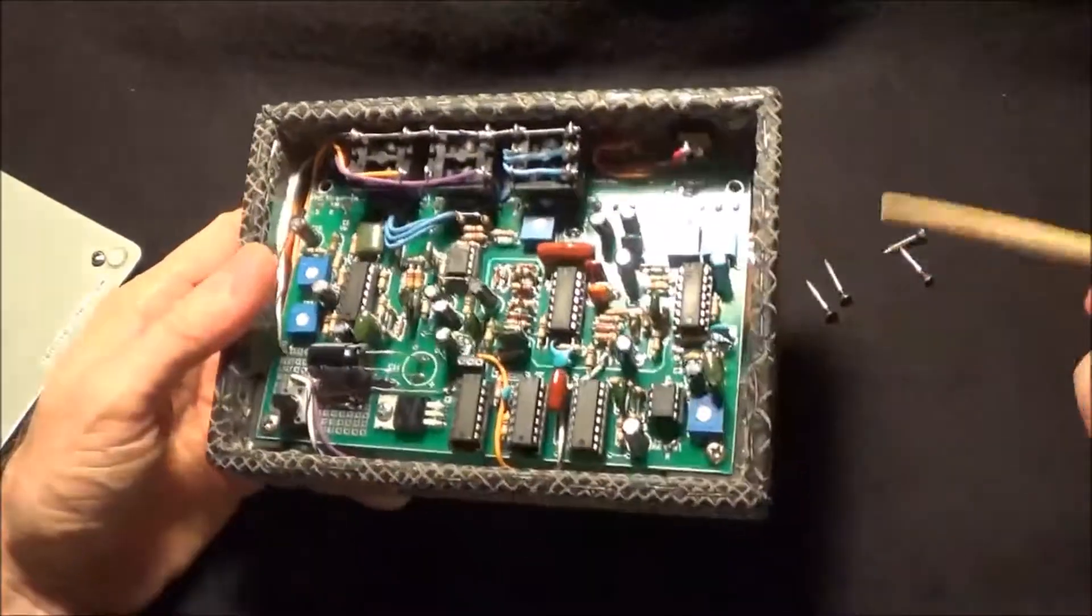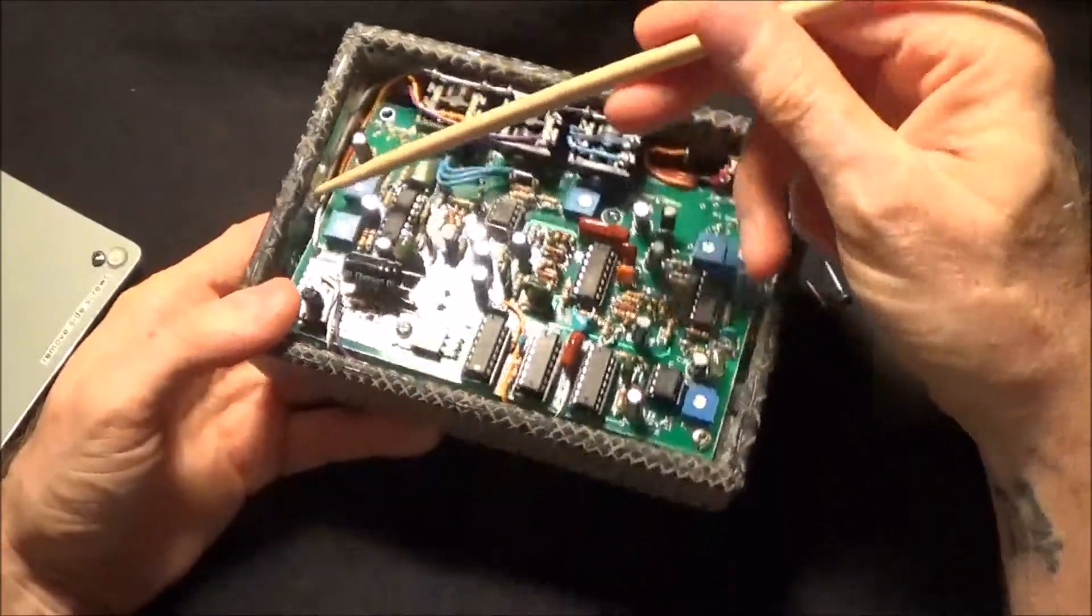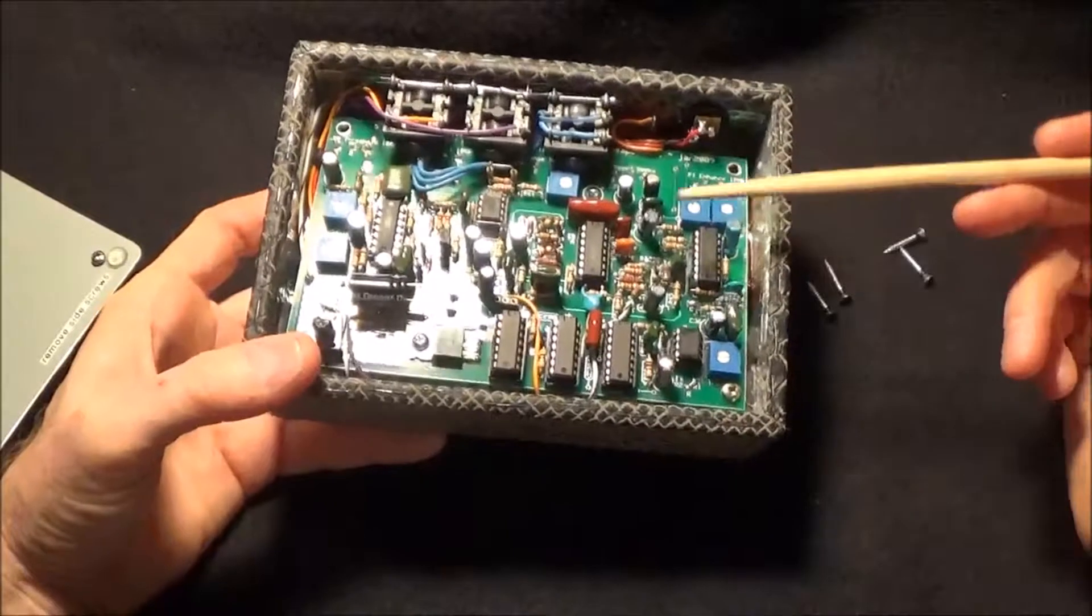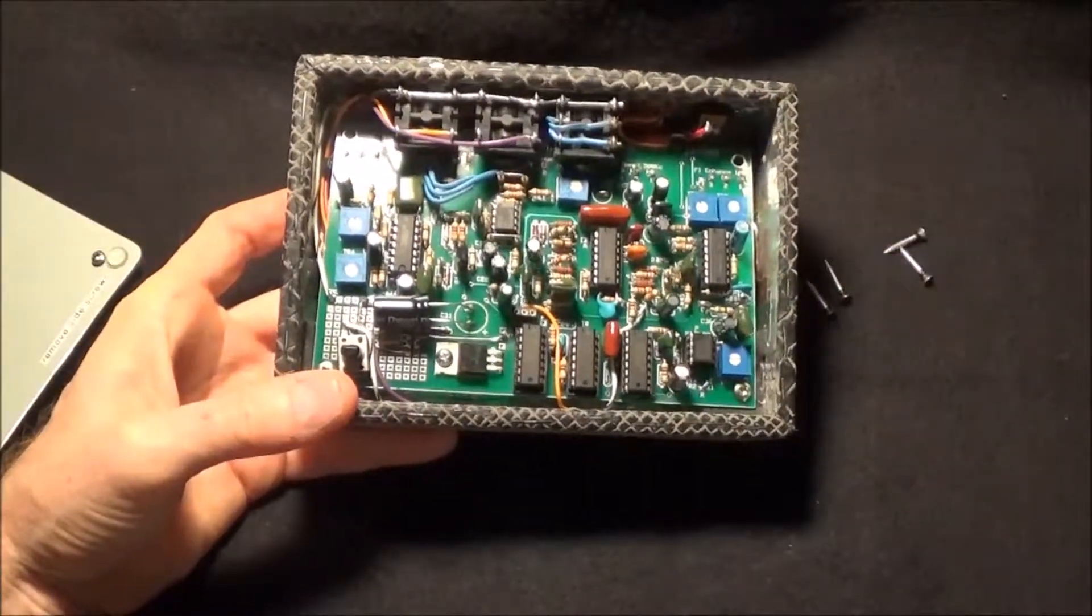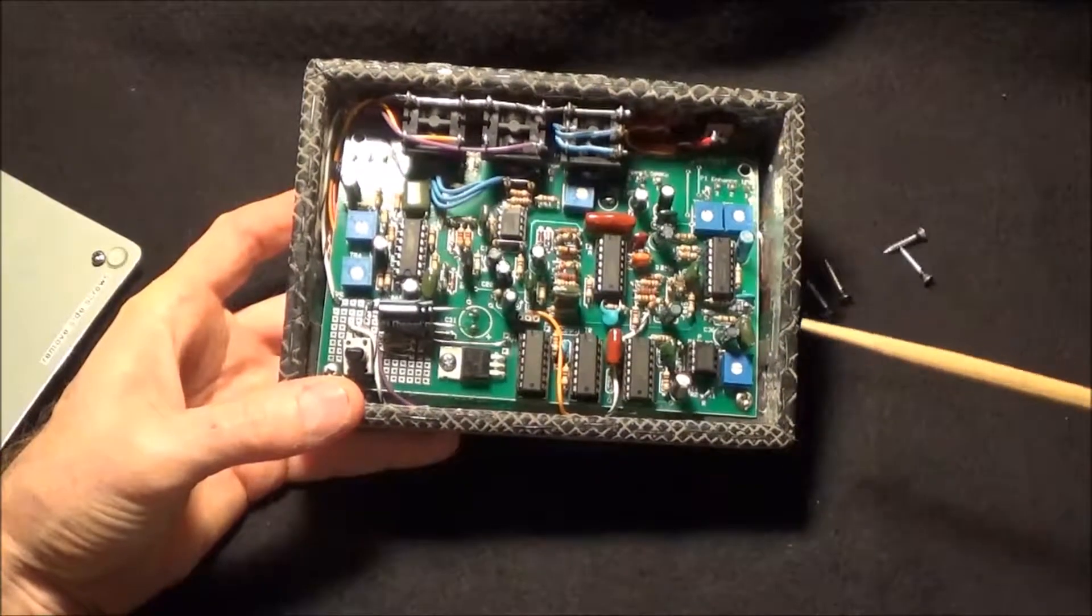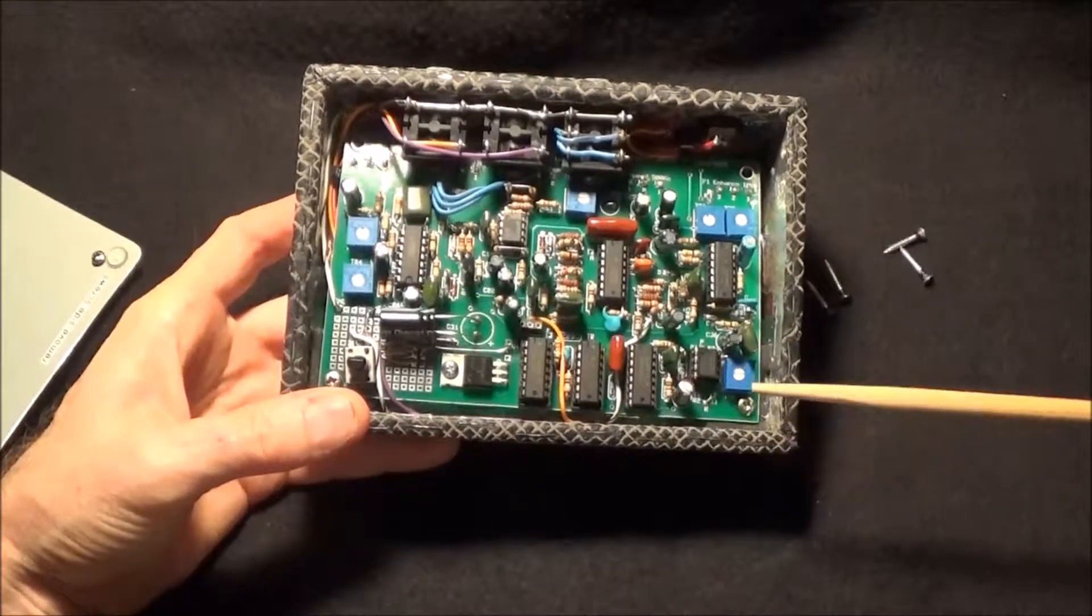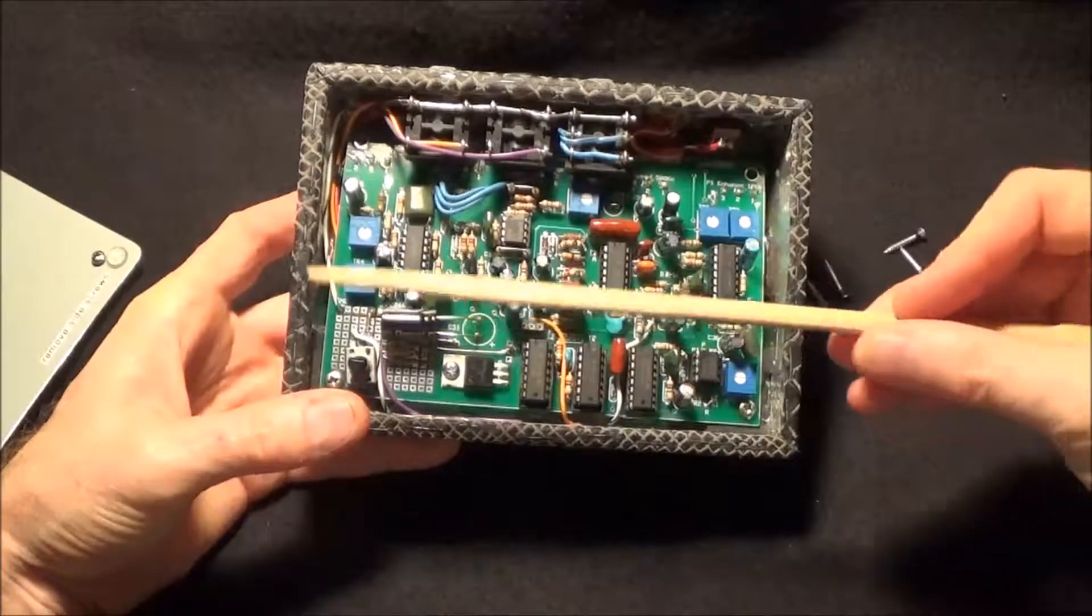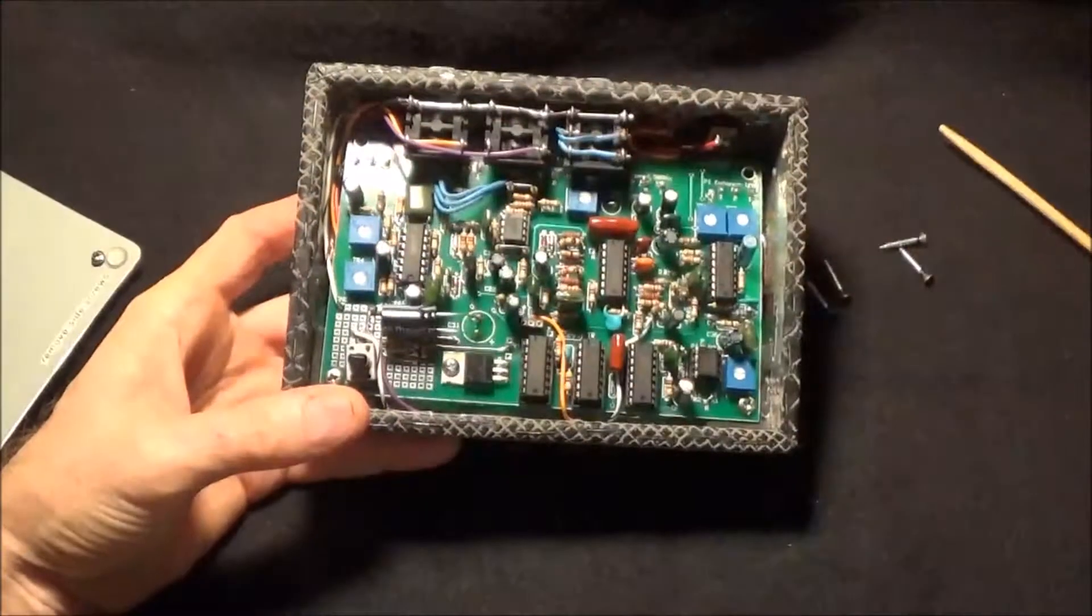You can't really see it, but under here I've got like a three quarter inch square piece of wood for support there. So this basically follows the same layout as the original ADA flanger, except that normally this PCB would actually be flipped over like this.